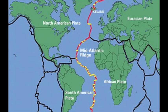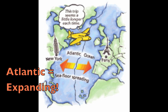The mid-Atlantic ridge, spreading at an average rate of about 2.5 cm per year, is a divergent boundary between the North American and Eurasian plates in the North Atlantic and South American and African plates in the South Atlantic, causing the Atlantic Ocean to expand due to seafloor spreading.